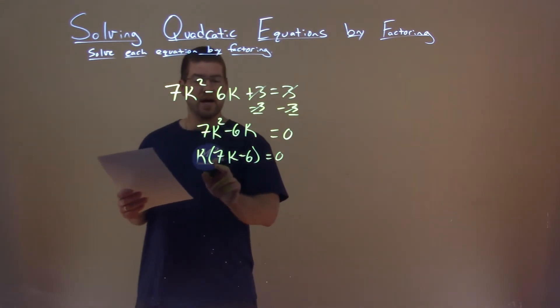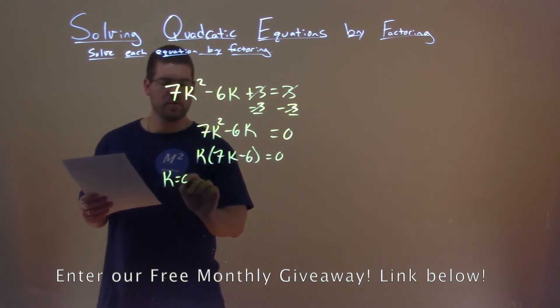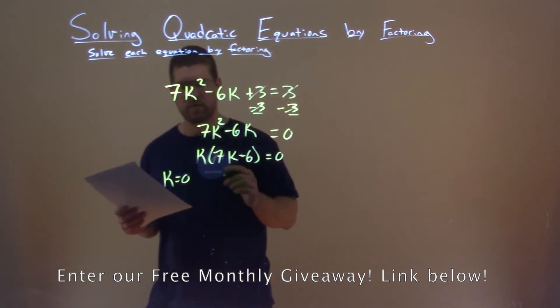We have k times 7k minus 6. So, we set both parts equal to 0. k equals 0, the first part, that's one of our answers.